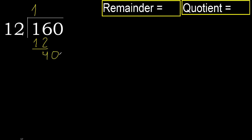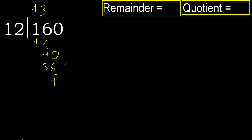Next, 40. 12 multiplied by 4 is 48, which is greater. Multiplied by 3, 36 is not greater. Subtract. Next, that is not a number, therefore finish.